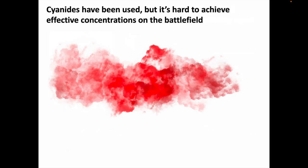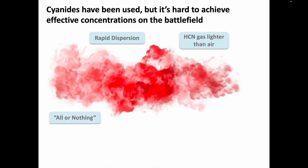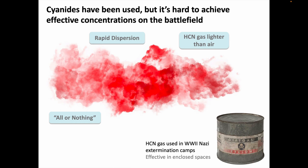A few cyanides were used in World War I, but they weren't very effective because it's hard to achieve toxic concentrations in the air on the battlefield due to rapid dispersion, the fact that HCN gas is lighter than air so it drifts upward away from people on the ground, and because cyanide toxicity is much more of an all-or-nothing effect — either you get a massive exposure, collapse, and die right away, or you get a smaller exposure and recover pretty quickly. Off the battlefield, cyanides can be very effective in enclosed spaces where you can keep the concentration high. Hydrogen cyanide gas was produced from the fumigating agent Zyklon B and was used in gas chambers in Nazi extermination camps — a very dark chapter in the history of chemistry and toxicology.